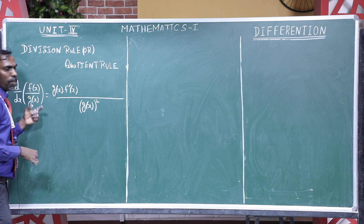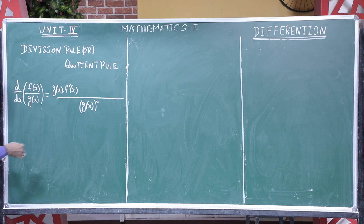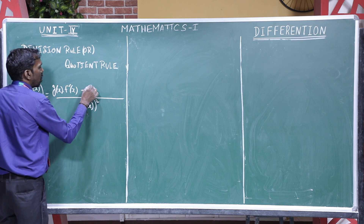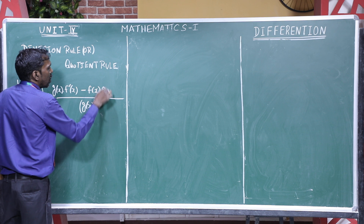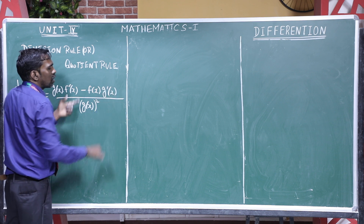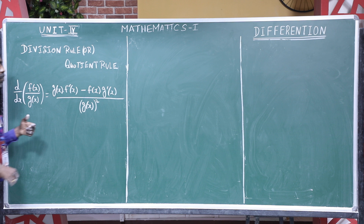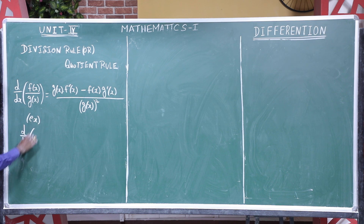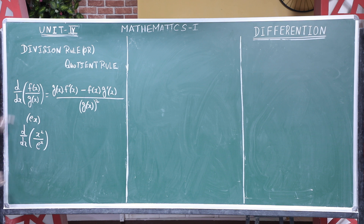Then put a minus sign. Here we have f(x), then g'(x) — the derivative of g(x). Now we are discussing one example: d/dx of x squared divided by e to the power x. So here f(x) = x² and g(x) = eˣ.